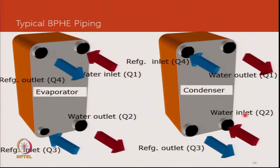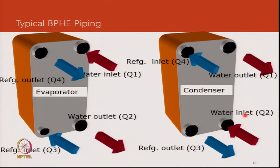Typical piping for a brazed plate heat exchanger differs between evaporator and condenser applications. In an evaporator, the refrigerant enters at the bottom and leaves on top to maximize the opportunity for refrigerant to evaporate and achieve the best heat transfer. Water enters on top and leaves at the bottom, and this is just reversed in the condenser.